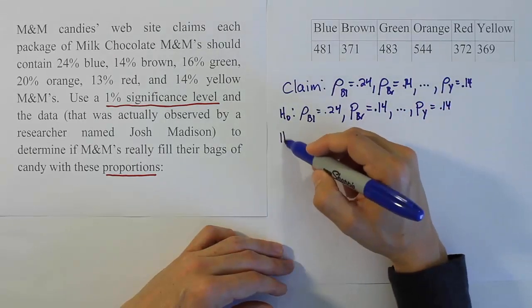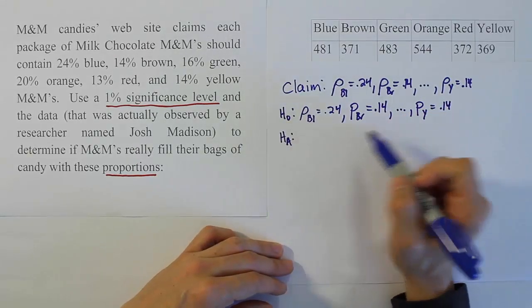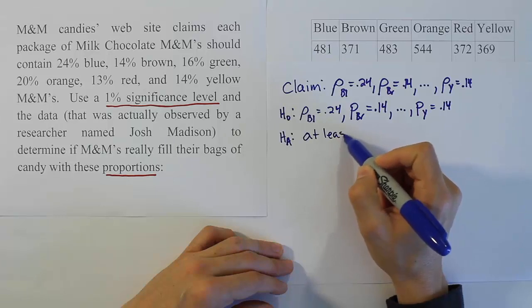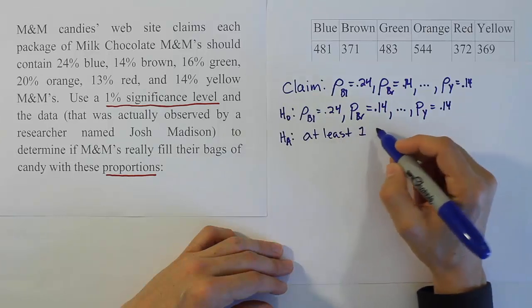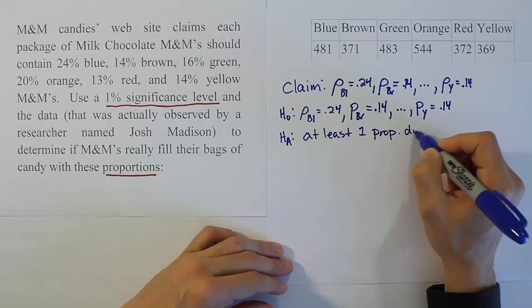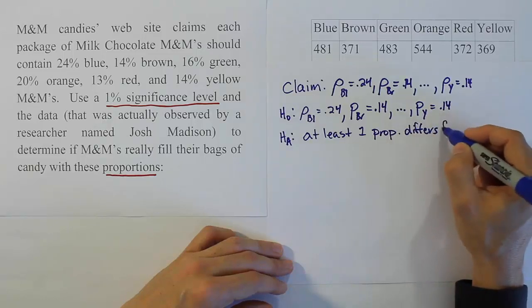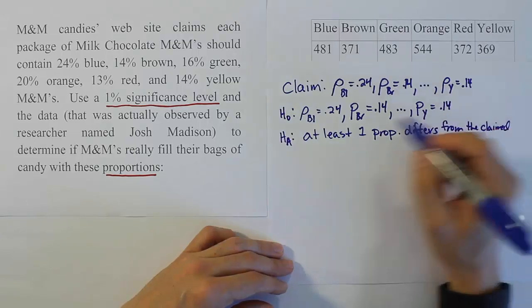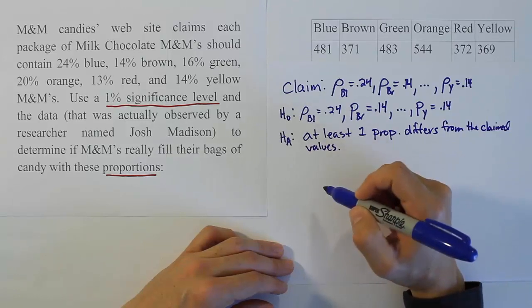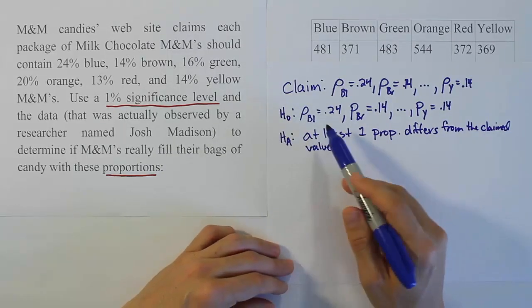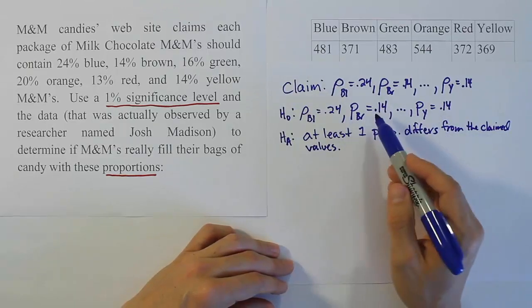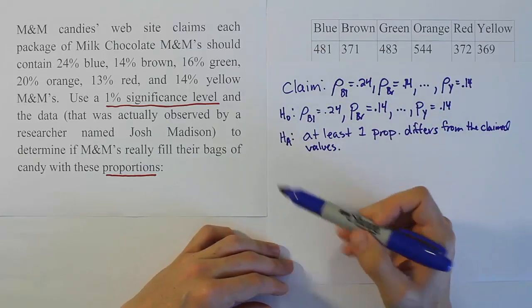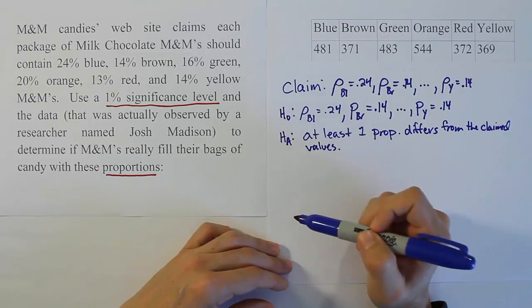HA is the statement that at least one of these differs significantly. At least one proportion differs from the claimed values. If one of them is off then another has to be off at least, but the idea is at least one differs from the claimed percentages by M&Ms. The claim, H0, HA are filled in.